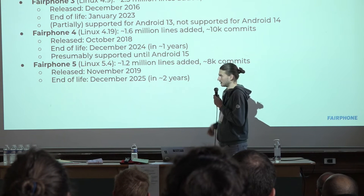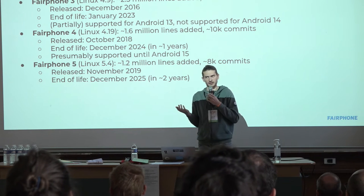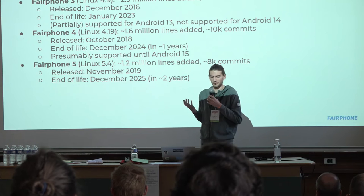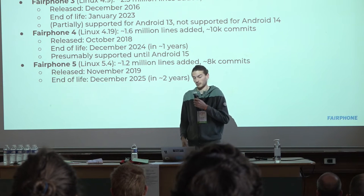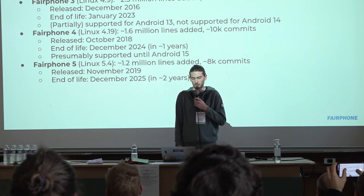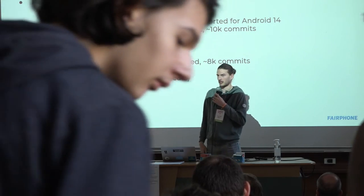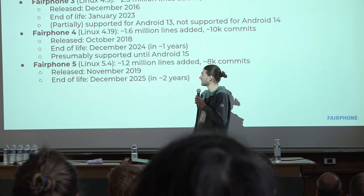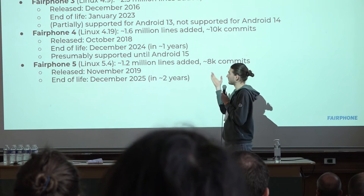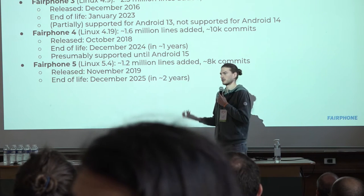Let's look at the Linux kernel shipping on Fairphone devices. With both Fairphone 1 and Fairphone 2, devices launched in 2013 and 2015, we were running Linux 3.4, which was released in 2012. Fairphone 2 was released in 2015 with a kernel released in 2012, but we actually managed to get up to Android 10 and Android 11 running on the device. With Fairphone 3, it's running Linux 4.9, released in December 2016, which became end of life on the Linux stable branch in January 2023. Since then we have to do more work to backport patches.